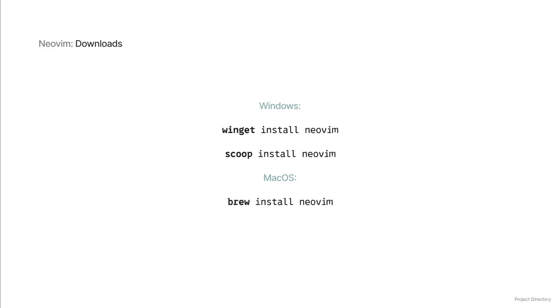On macOS, you can install it using Homebrew. On Linux, refer to the installing Neovim guide for the command for your specific distribution. Link is in the description.